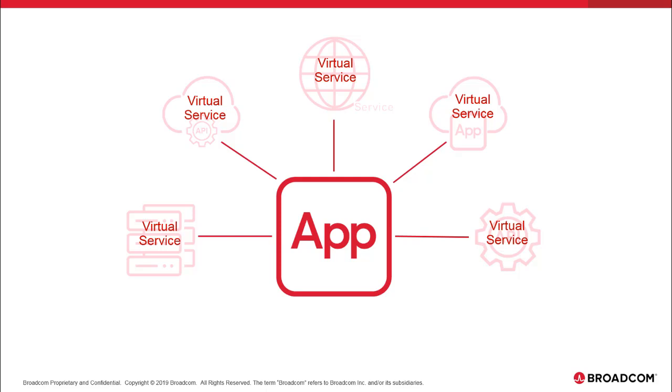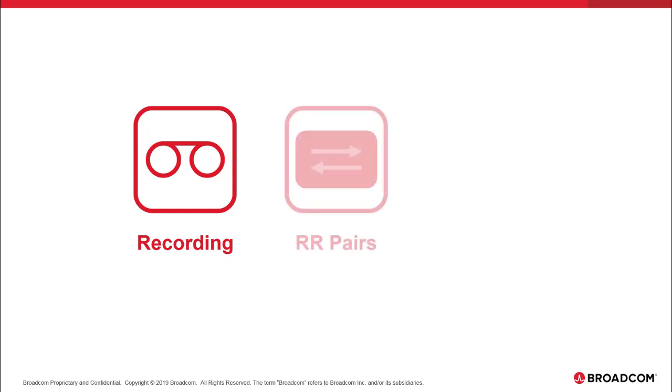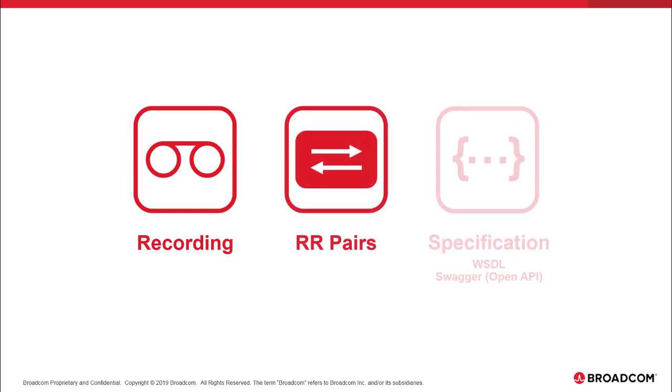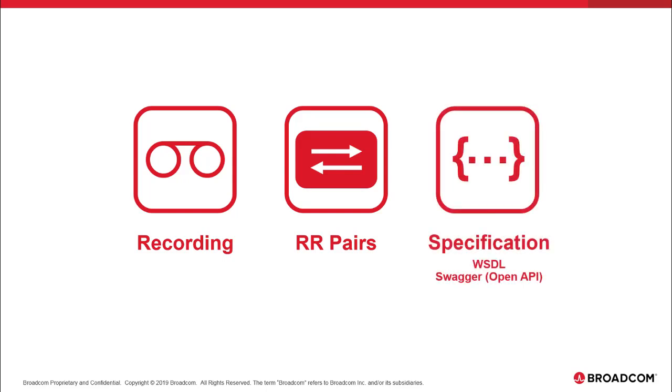Service virtualization can create a virtual service from both available and unavailable services. When a service is available, you can record live transactions between a client and a server, and then create a virtual service from the captured transactions. When a service is unavailable, you can create a virtual service from other sources, such as request and response pairs, or a development specification like Swagger, OpenAPI, or a WSDL spec.